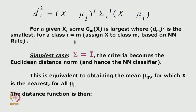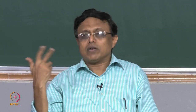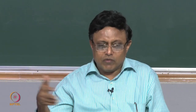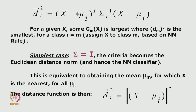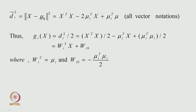The simplest case is when the covariance matrix equals the identity matrix I. This yields the Euclidean distance norm — the nearest neighbor or minimum distance classifier — which is equivalent to taking the mean of the class for which x is nearest. Substituting an identity matrix into the expression, the two terms yield the squared norm of the distance in d-dimensional space, giving d^2.